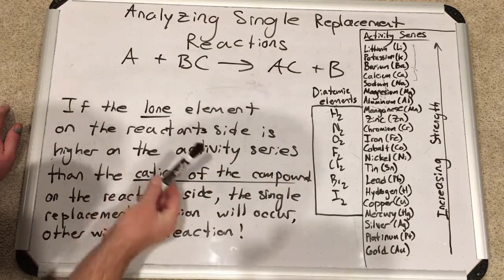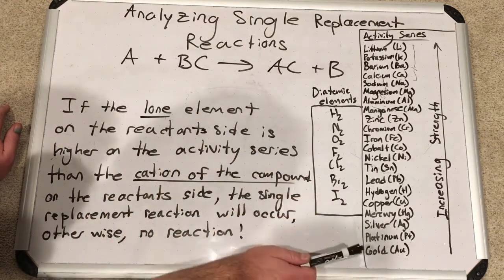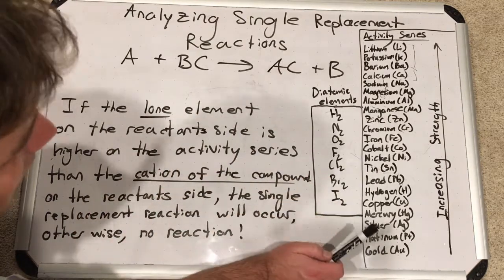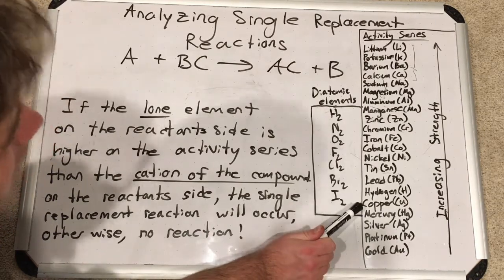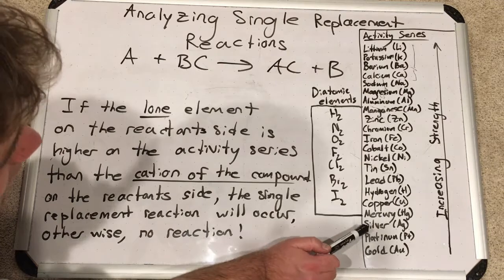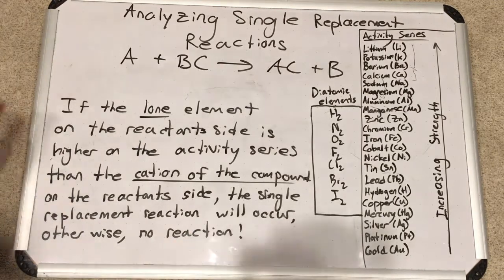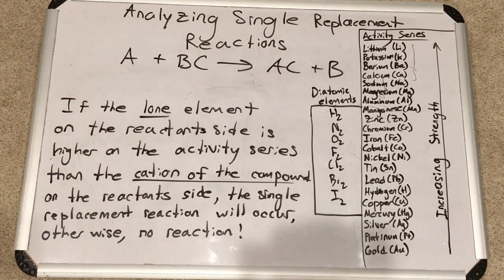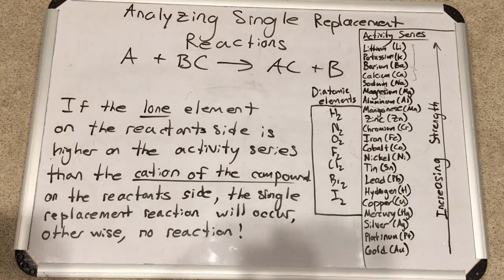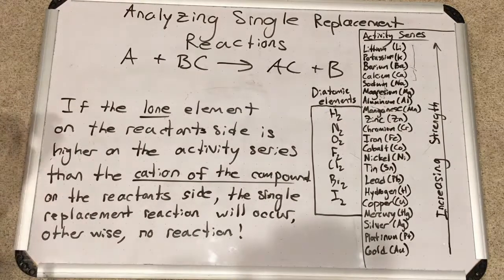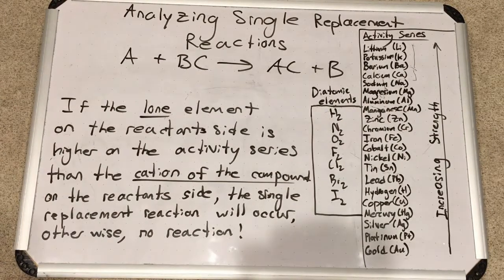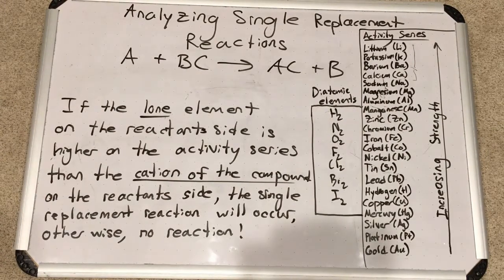And we get some post-transition metals like tin and lead. Then we get some non-metals like hydrogen. And then go back to some higher weight metals: copper, mercury, silver, platinum, and gold, some higher weight metals in the transition metals. So those are at the bottom of the activity series. But as you go up the activity series, you increase your strength and ability to knock other elements out of compounds.